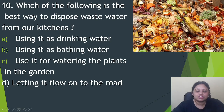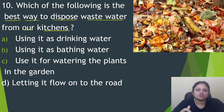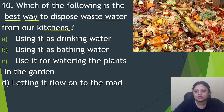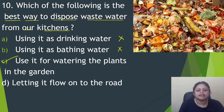Next question: which of the following is the best way to dispose of waste water from our kitchen? From our kitchen, a lot of waste water is produced. We should not waste water because there is scarcity of water. We cannot use kitchen waste water as drinking water, but we can use it for watering plants in the garden so that it will not be wasted. We should not let it flow onto the road. So the correct answer is option C.